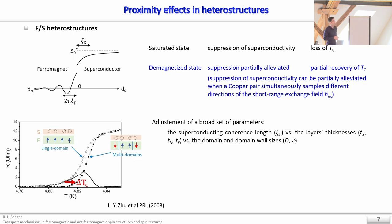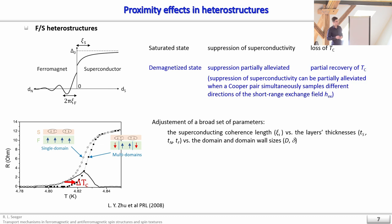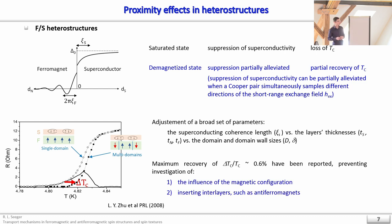A typical measurement shows resistance versus temperature for these bilayers, with the ferromagnet set either to the saturated state or a multi-domain state. The critical temperature is larger in the multi-domain case, confirming that domain walls partially suppress Cooper pair breaking. However, to observe this effect you need to carefully adjust several parameters, for instance the coherence length of Cooper pairs relative to domain and domain wall sizes, making it difficult to optimize all parameters simultaneously.